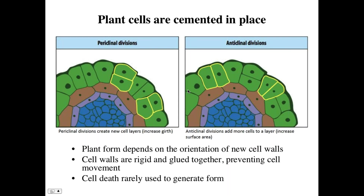Cell death is rarely used to generate form in plants, unlike in metazoans. You wouldn't kill a cell necessarily to allow for developmental events, because that cell is surrounded by a cell wall and the surrounding cells aren't going to move to compensate for that. So that's another pretty key difference.